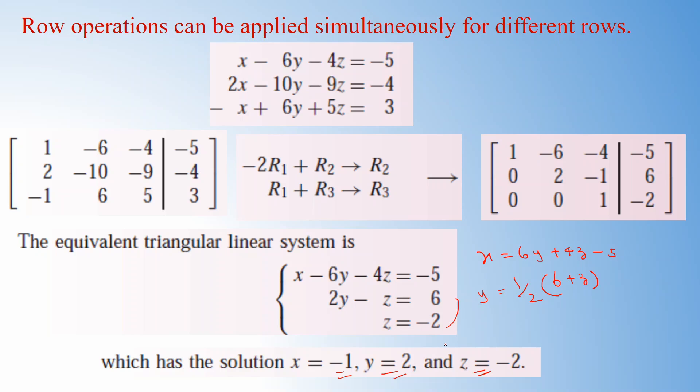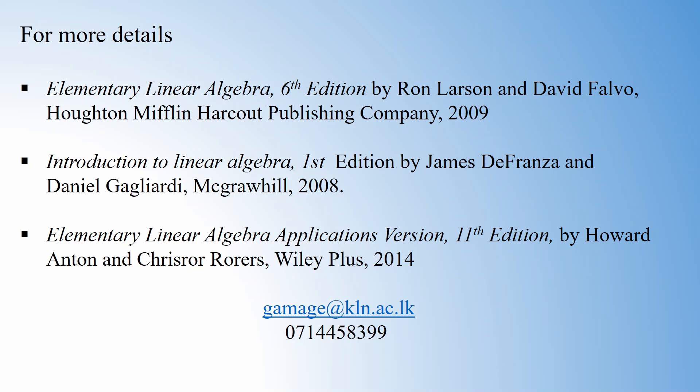What you have to notice is that you can apply row operations to obtain the solution of a linear system. First assemble the augmented matrix, then apply row operations to convert the left-hand side into upper triangular form. You do not have to apply row operations separately — you can apply them simultaneously to save time and workload. All the examples discussed here have a unique solution, but there may be linear systems that have no solution or whose solution is not unique.